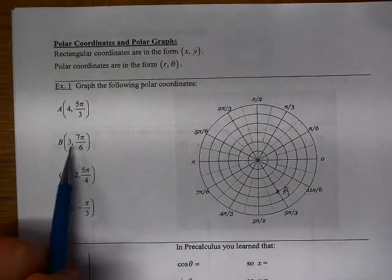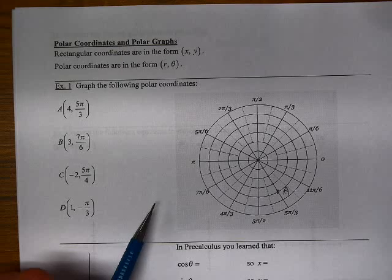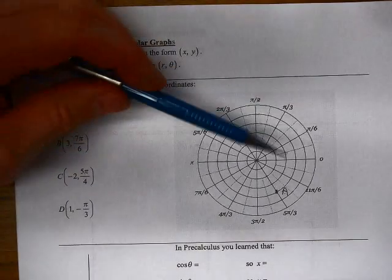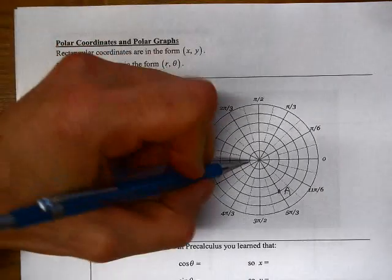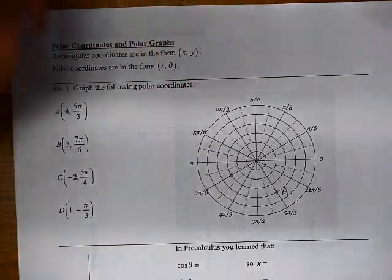And then we can do the same thing for (3, 7π/6). So we start here, we turn toward 7π/6, we walk forward 3. 1, 2, 3 units.